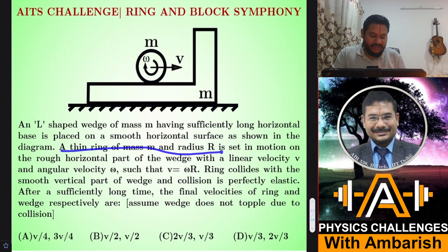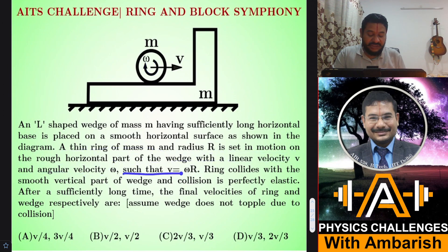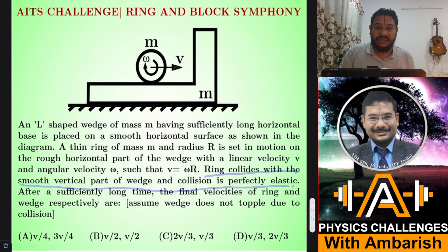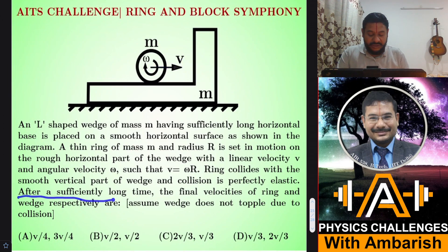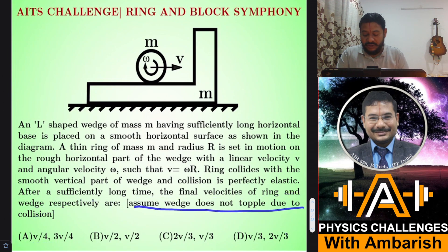A thin ring of mass m and radius R is set in motion on the rough horizontal part of the wedge with linear velocity v and angular velocity ω, so it starts with pure rolling such that v equals ω R. This ring collides with the smooth vertical part of the wedge and the collision is perfectly elastic. After a sufficiently long time, the final velocity of the ring and wedge respectively are... and four options are given. We have to assume wedge does not topple due to collision.